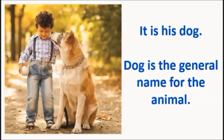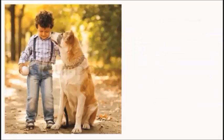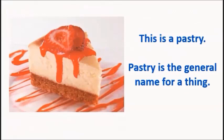Third, 'It is his dog.' In this sentence, we are talking about a dog. Dog is the general name for the animal. Fourth, 'This is a pastry.' In this sentence, we are talking about a pastry. Pastry is the general name for a thing.